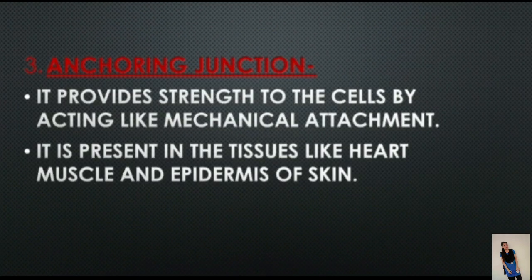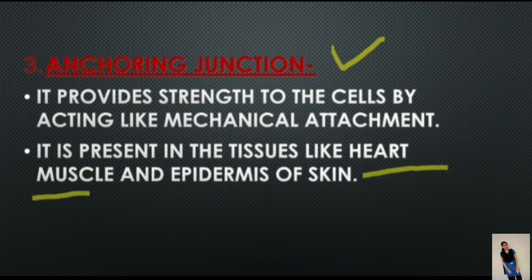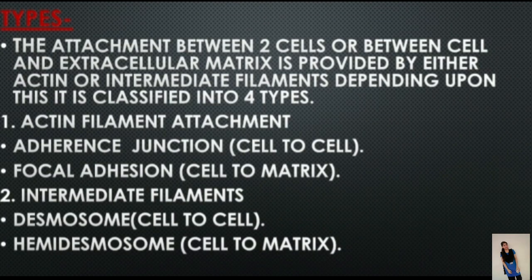The third junction is anchoring junction. Anchoring junctions are junctions that provide strength to the cell by acting as mechanical attachments. These junctions provide firm attachment between two cells or between a cell and the extracellular matrix. They are present in tissues like heart muscle and epidermis of the skin. The attachment is provided by either actin or intermediate filaments, and depending on these, anchoring junctions are classified into four types.